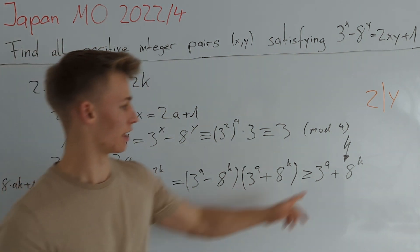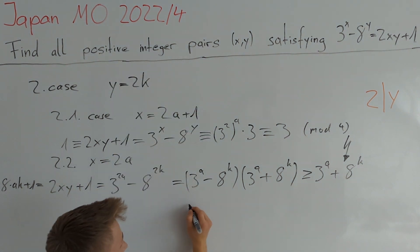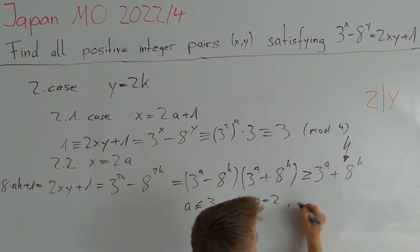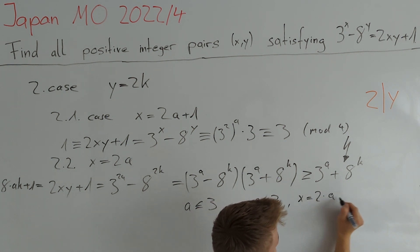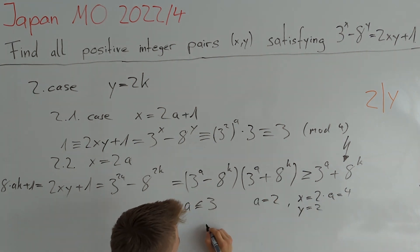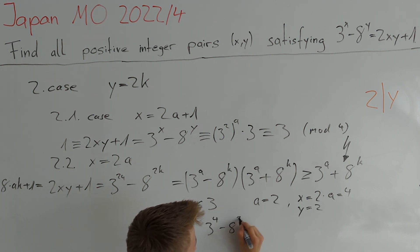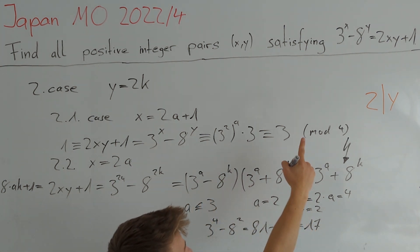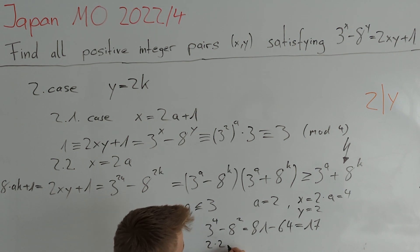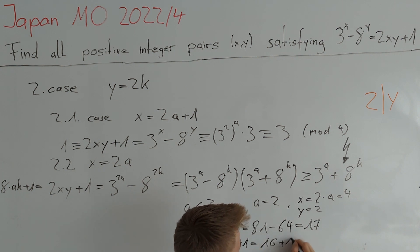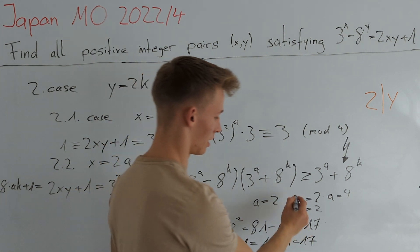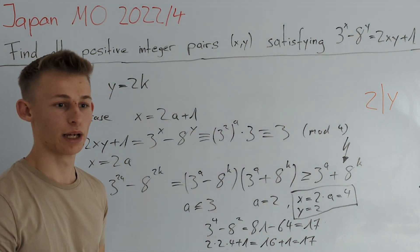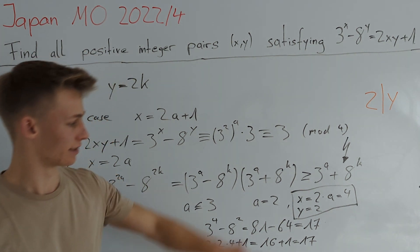This gives a contradiction for a greater than or equal to 4, so a is at most 3. For a equals 2 we find a solution: x equals 2a equals 4 and y equals 2. Indeed, 3^4 minus 8^2 equals 81 minus 64 equals 17, and 2xy + 1 equals 2 · 4 · 2 + 1 equals 16 + 1 equals 17. Checking a equals 1 and a equals 3 shows these yield no solutions. Therefore (x, y) equals (4, 2) is the only solution.